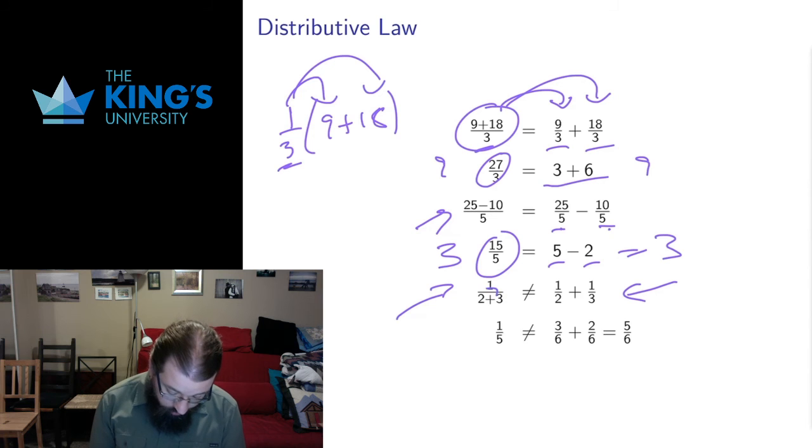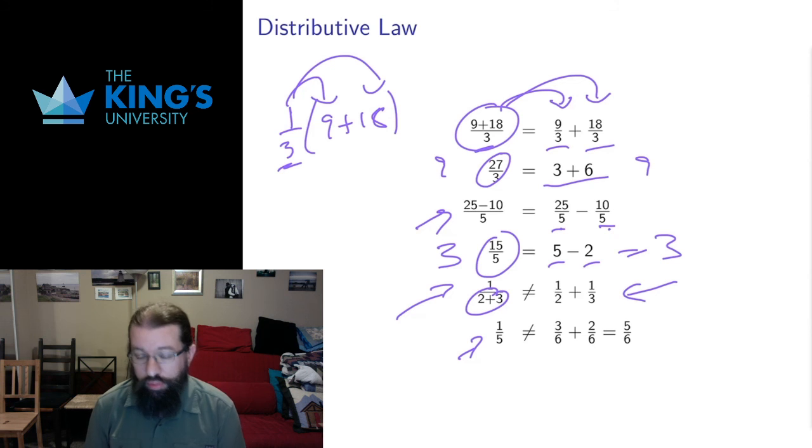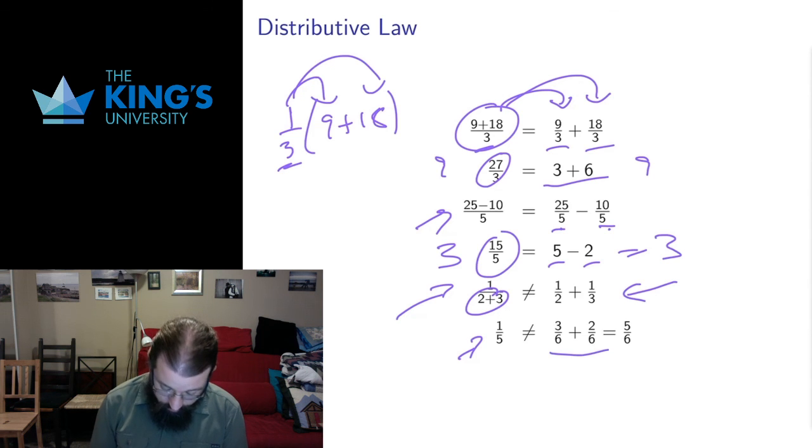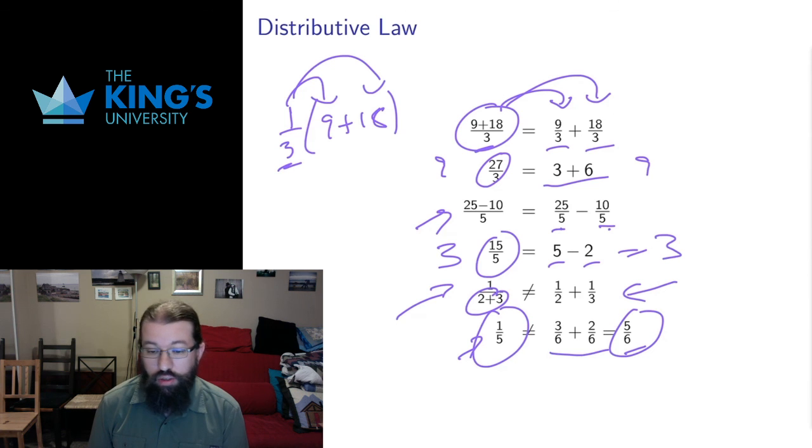Well, if we just add the 2 plus 3, we get 1/5. But if I split up the denominator, I would get 1/2 plus 1/3. If I add those fractions together, I'd have to go to a common denominator of 6. I would get 5/6.